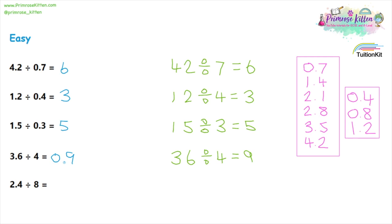Let's look at the last question for this level: 2.4 divided by 8. So 24 divided by 8 gives us 3. Looking at that, it doesn't seem like a sensible answer — we're not going to say three 8s fit into 2.4, as 2.4 is smaller than 8. So we put the 3 here for the moment, and because the decimal was ignored, we're going to say it's 0.3. The key lesson is that just like with multiplication, addition, and subtraction, if you ignore the decimal places you will get the correct digits — but to get the actually correct answer, you need to look at the decimal places.